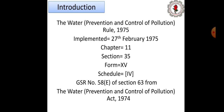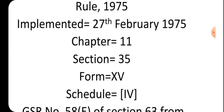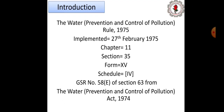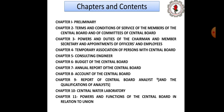Moving ahead — this is what I wanted to say. Write the heading at the center of the page. I mentioned this in the Water Act video as well, but I said it is necessary to tell students this at the beginning of every act so they know how to write it. The Water Prevention and Control of Pollution Rules 1975 was implemented on 27th February 1975. It has 11 chapters, 35 sections, 15 forms, and 4 schedules.